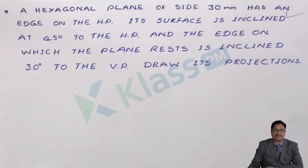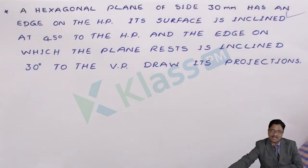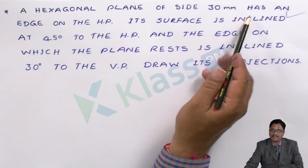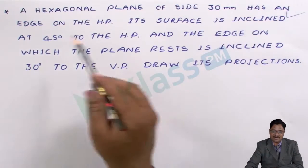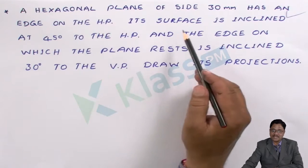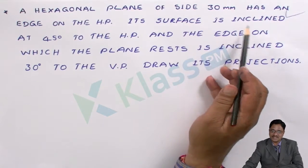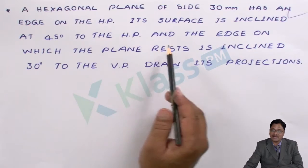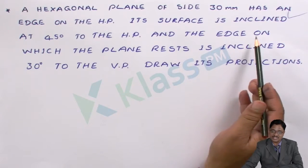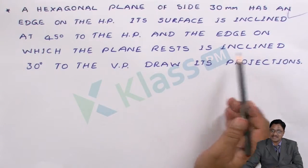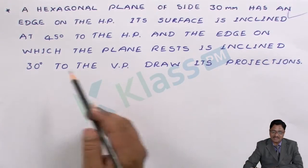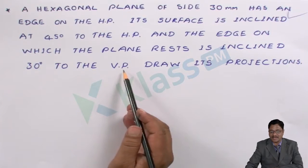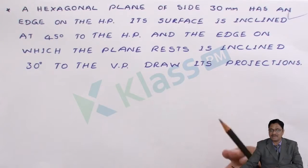Let me check another problem. I will read it out and try to understand what has been given. A hexagonal plane of side 30 mm has an edge on the HP. Its surface is inclined at 45 degrees to the HP, and the edge on which the plane rests is inclined 30 degrees to the vertical plane. Draw its projections.